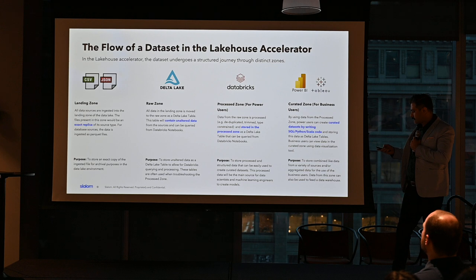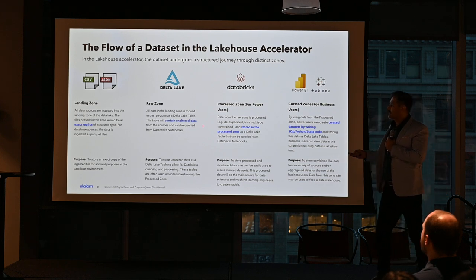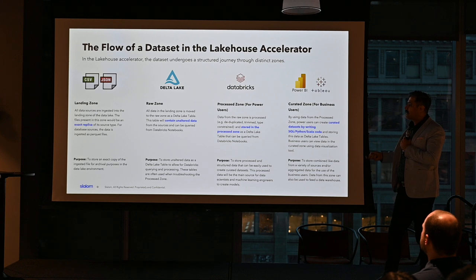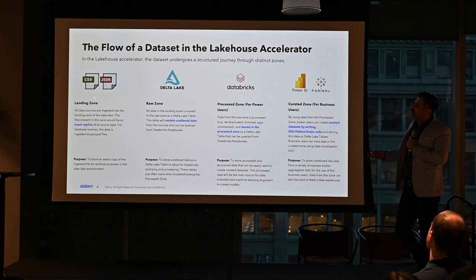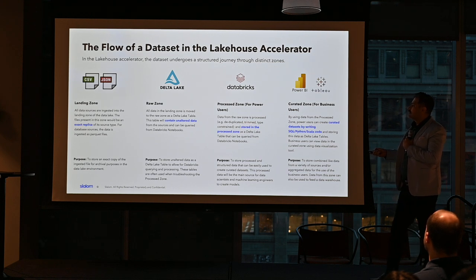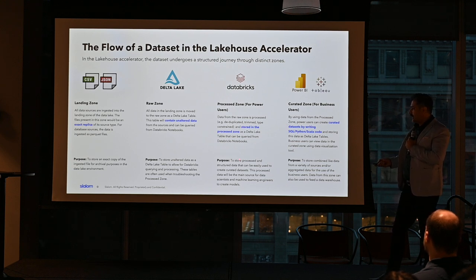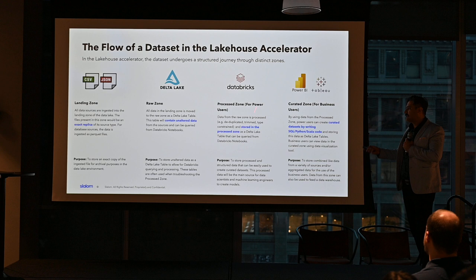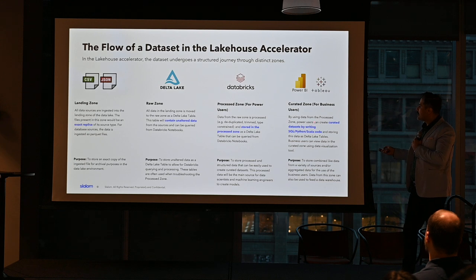The raw zone is a replica of your landing zone, except things are now in Delta format. The advantage is you can leverage Databricks capabilities like Delta table time travel. The process zone is where you do some processing — filtration, PII removal — and store it in Delta format. Data scientists can start connecting data here. However, the recommendation is to connect to the curated or gold zone, where everything is aggregated.